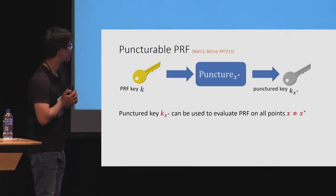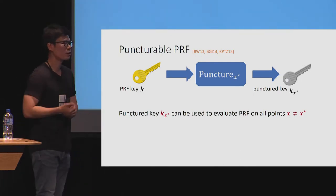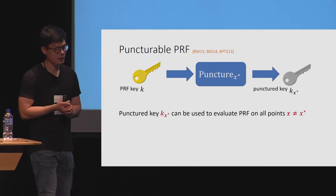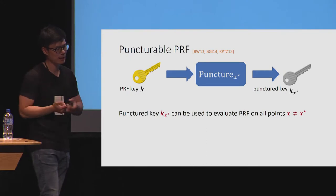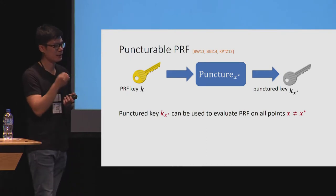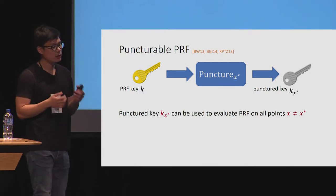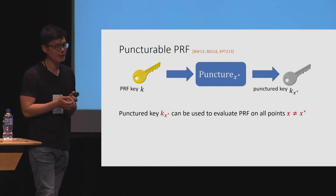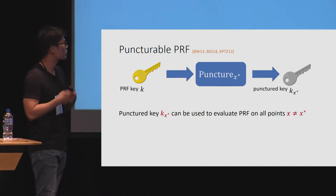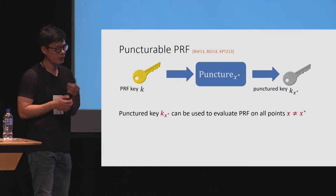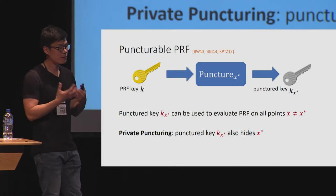Let me give a quick overview of what we do at a technical level. As in previous works, we rely on puncturable PRFs. A puncturable PRF is just like a standard PRF, but it has a puncturing algorithm that takes a standard PRF key and punctures it at some specific point X star to derive a new punctured key. This punctured key can be used to evaluate the PRF on all points in the domain except at the punctured point. In addition to the traditional requirements of puncturable PRFs, we can define additional properties useful for watermarking.